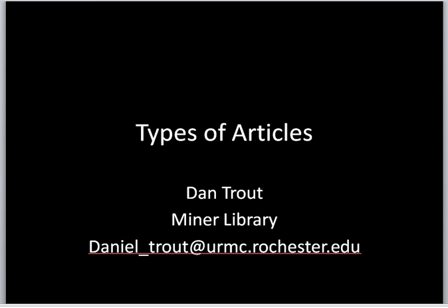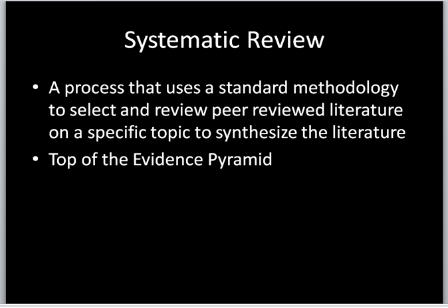The first article type is called a systematic review. A systematic review is a process that uses a standard methodology to select and review peer-reviewed literature on a specific topic to synthesize the literature. It is often at the top of the evidence pyramid. A systematic review will often use a librarian to help locate the literature, and clinicians will evaluate the literature and remove articles for bias or poor study design, allowing the most high-quality articles to be included.